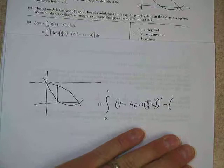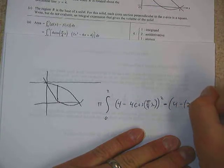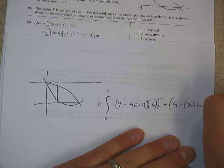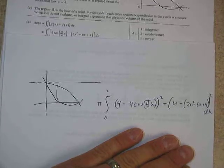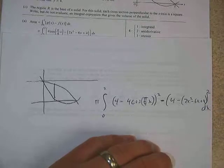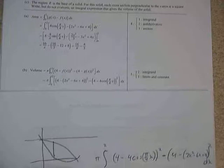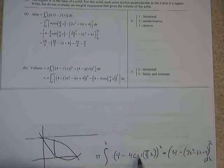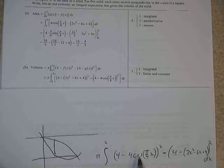And then the inside is going to be 4 minus the top function. So 4 minus, and then it's 2x squared minus 6x plus 4, all squared dx. And that would be our washer method setup for that.